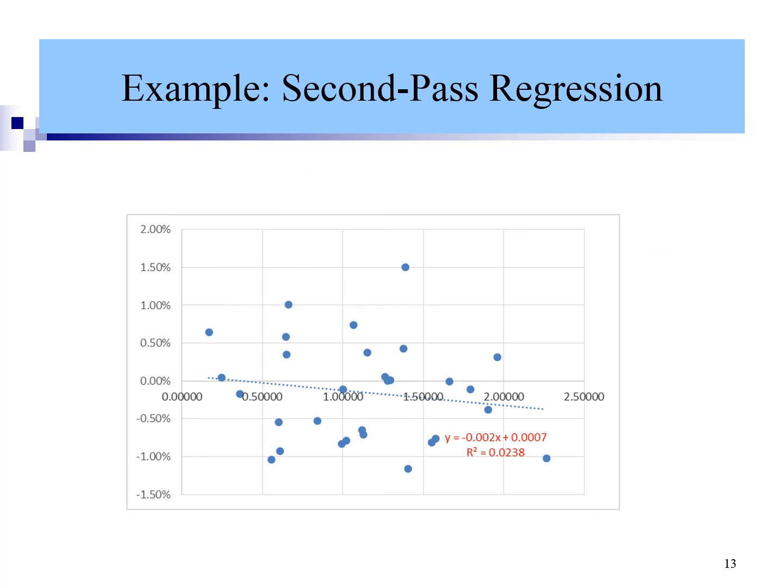The second-pass regression can be depicted graphically as shown in the slide. The x-axis is the beta of each stock, and the y-axis is the average excess return of each stock. There are 30 stocks in total, so there are 30 points. The results show that beta cannot explain the average excess return. The R-squared is low.